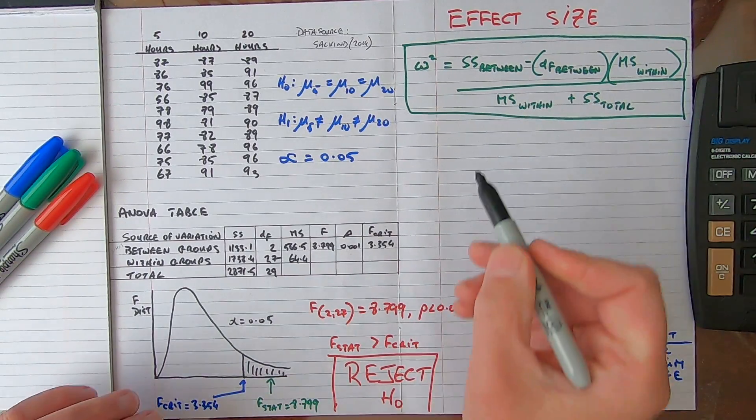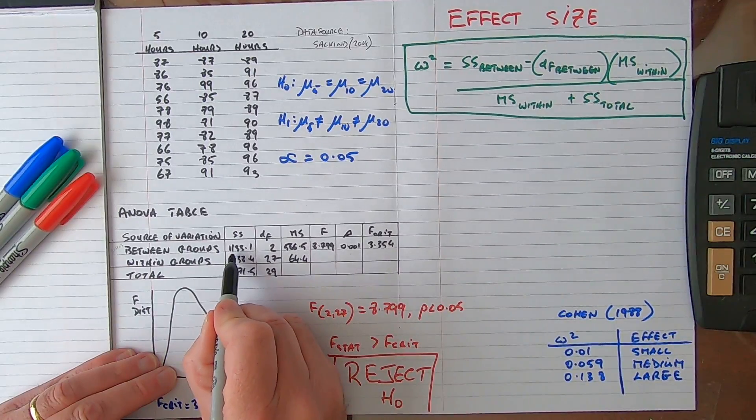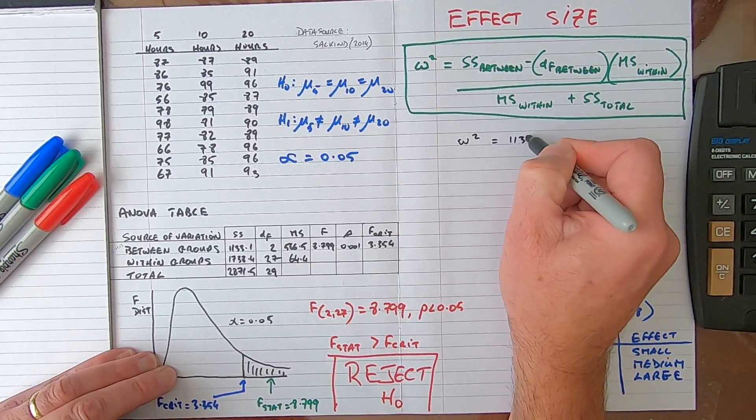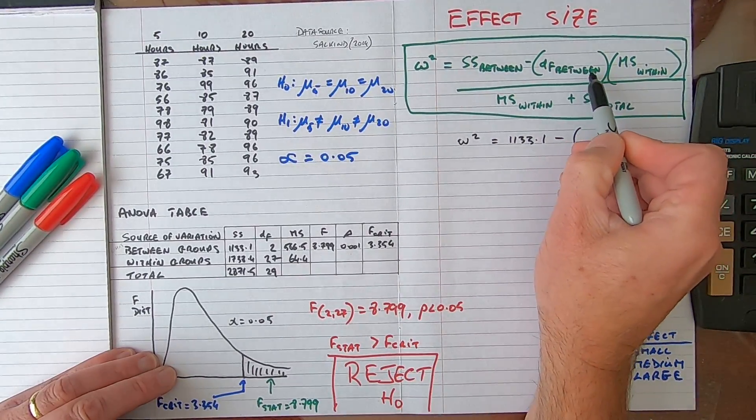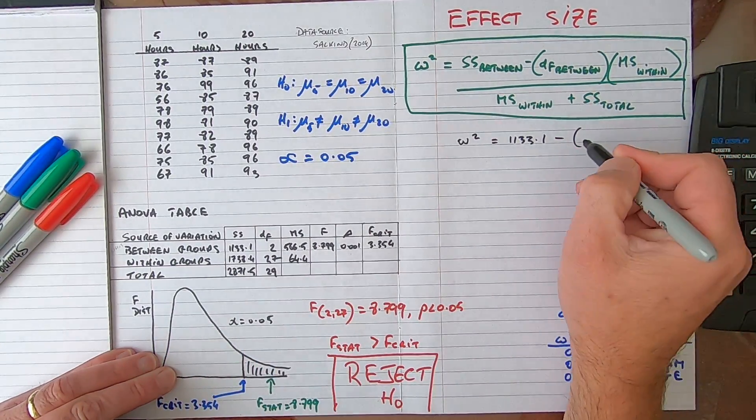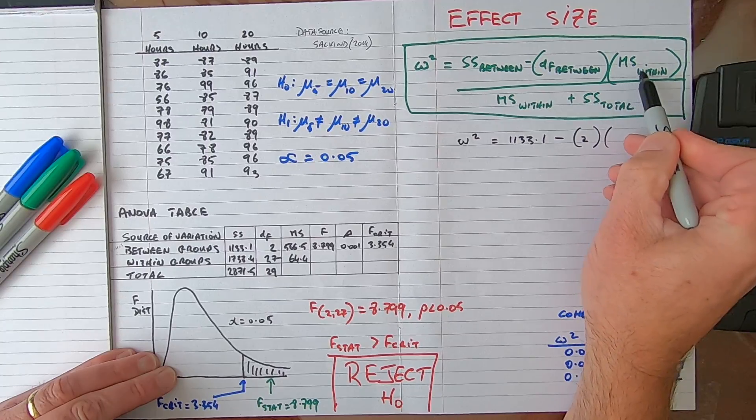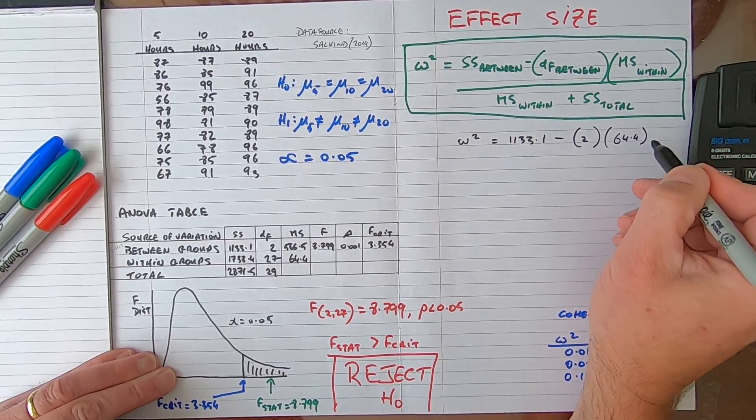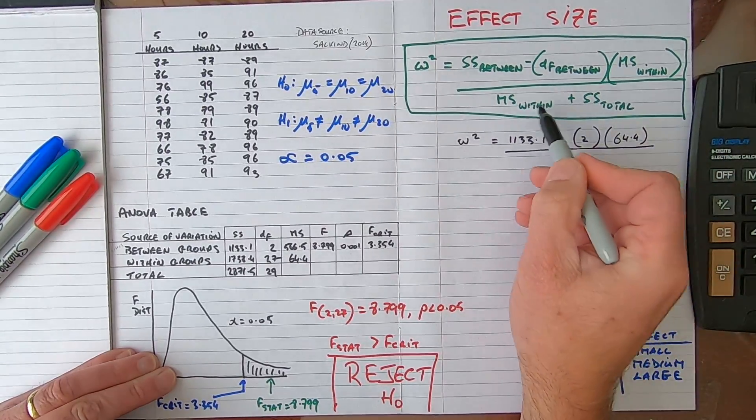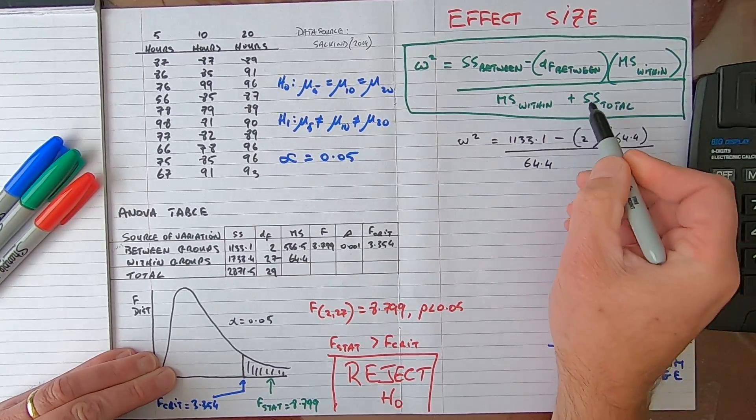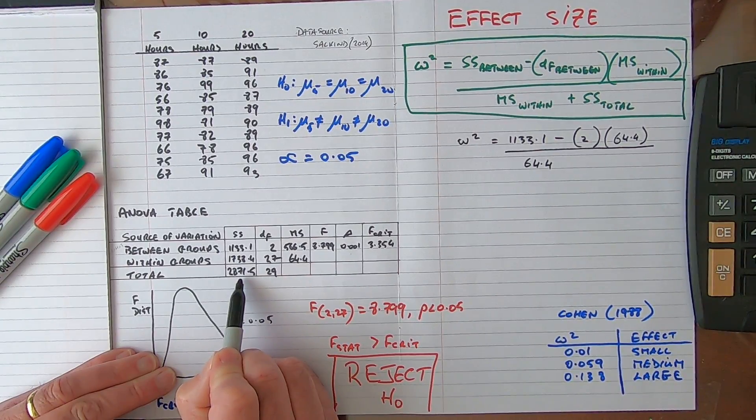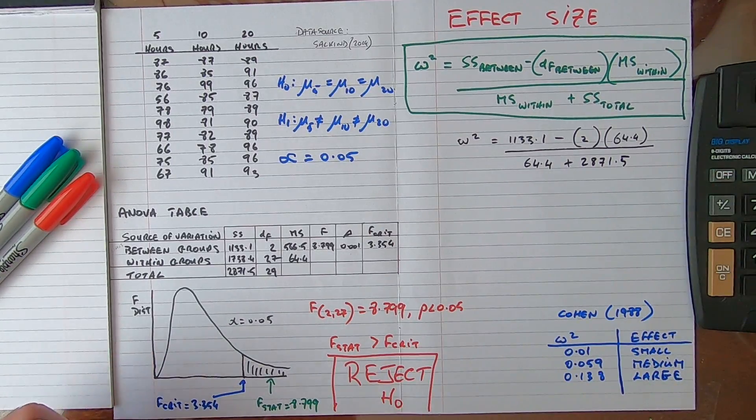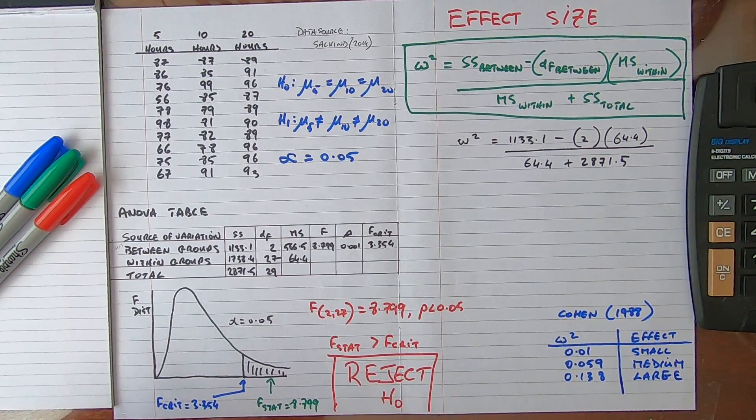All five values are on our ANOVA table, so let's put them together. Starting with the sum of squares between, we can see the sum of squares between is 1133.1. So omega squared is equal to 1133.1 minus, and I'm going to keep the brackets here, the degrees of freedom between, which is 2, multiplied by the mean square within, which is 64.4. I'll draw the line here to divide it. Mean square within is 64.4 again, plus the sum of squares total, that's here in the table in the bottom left hand corner, 2871.5. So there are the five values and they have all been taken directly from the ANOVA table.